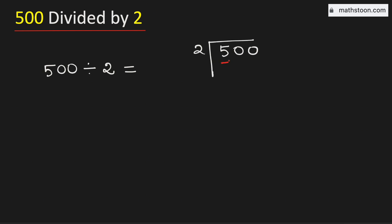Consider the first digit 5. We know that 2 times 2 is 4. Subtract, we get 1. Now 1 is less than 2. That is why we will bring down this number 0 here.